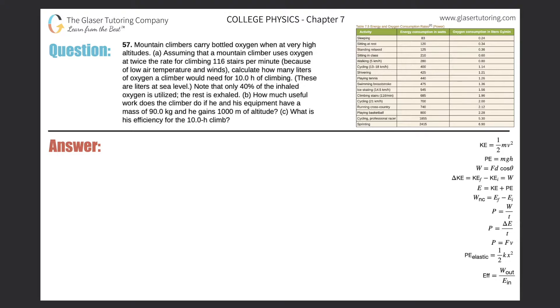Number 57. Mountain climbers carry bottled oxygen when at very high altitudes. Letter A: Assuming that a mountain climber uses oxygen at twice the rate for climbing 116 stairs per minute because of low air temperature and winds, calculate how many liters of oxygen a climber would need for 10 hours of climbing.